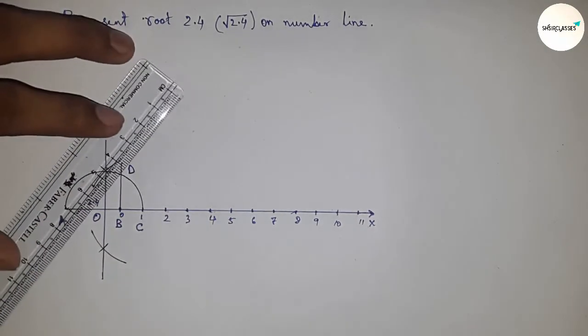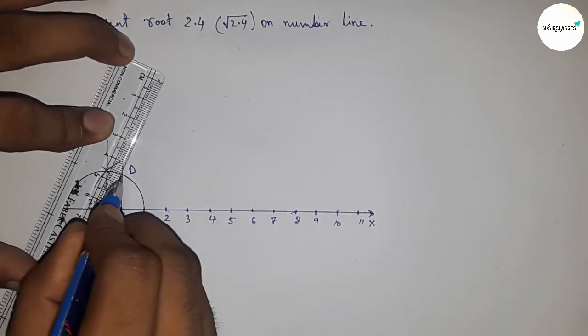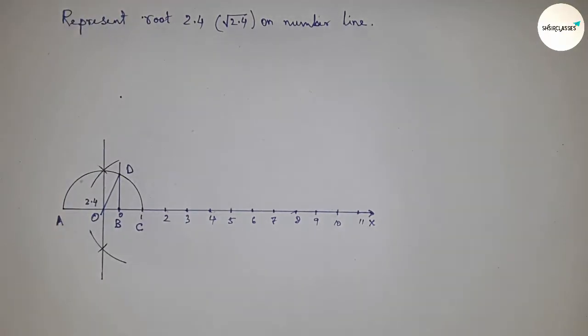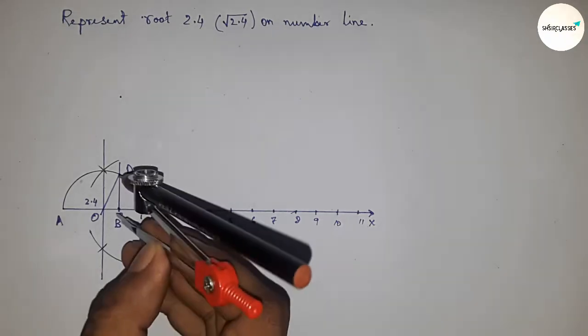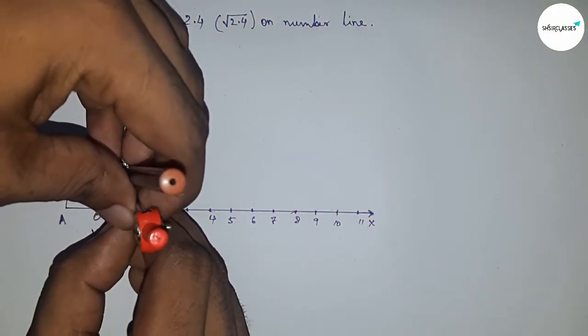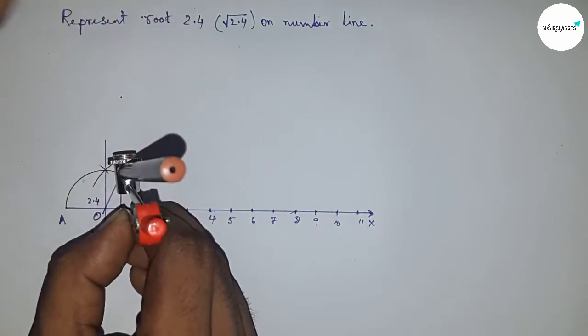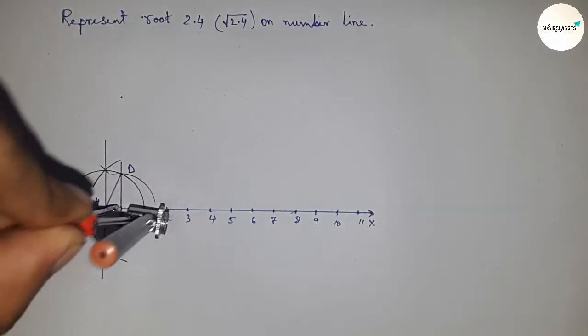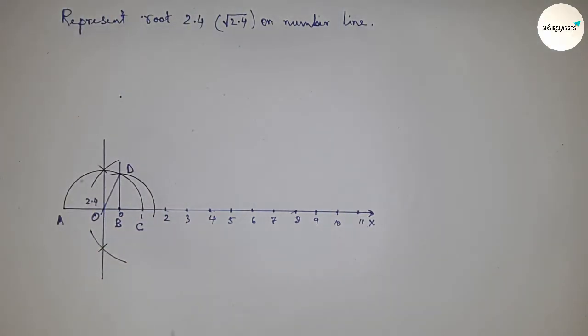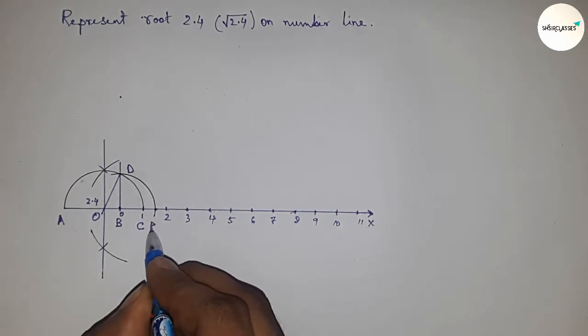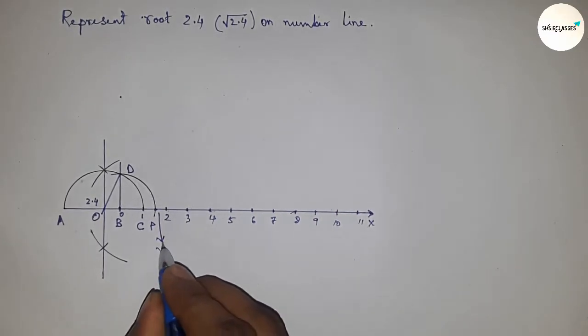Join this line which meets the semicircle at point D. Now take the distance BD, which is equal to root 2.4. Draw an arc which meets the number line at point P. This is the representation of root 2.4 on the number line.